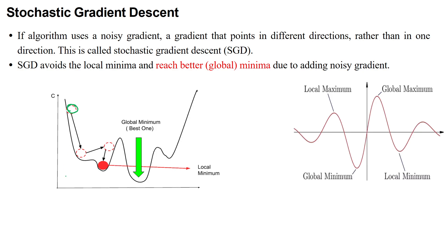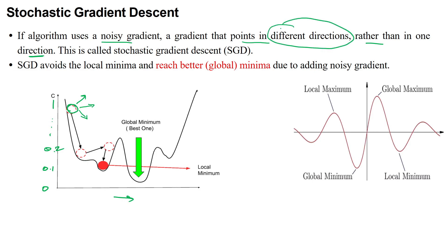Looking at the graph, the error at the initial iteration starts at a certain point, and iterations (epochs) are applied along the x-axis. When using the noisy gradient in the stochastic gradient algorithm, the gradient points in different directions — it may move in this direction, or that direction, or another direction — rather than a single direction. This is one of the main features of stochastic gradient descent.